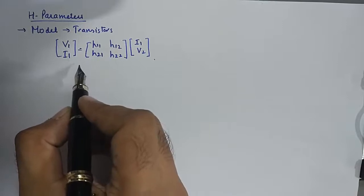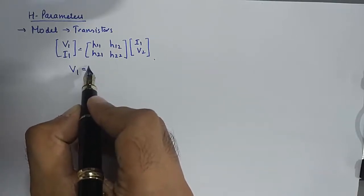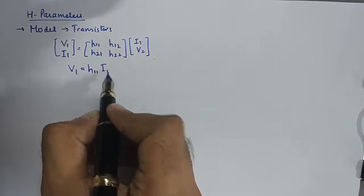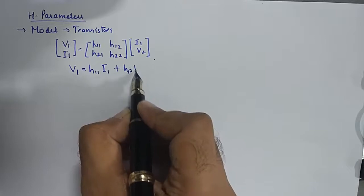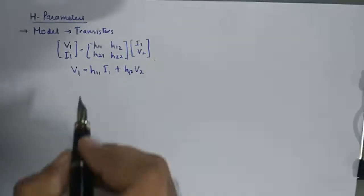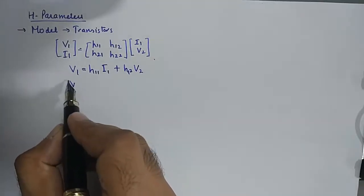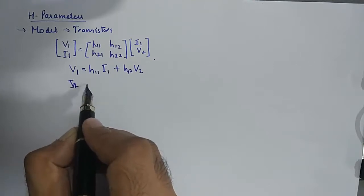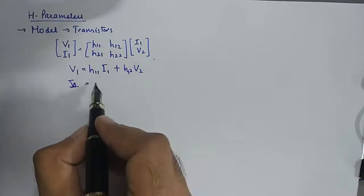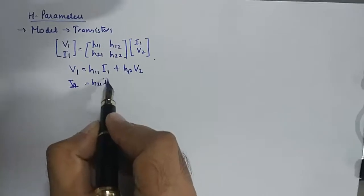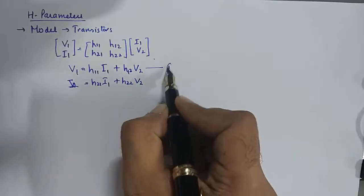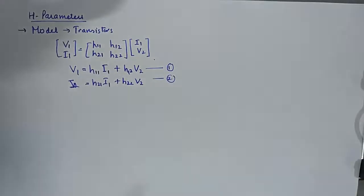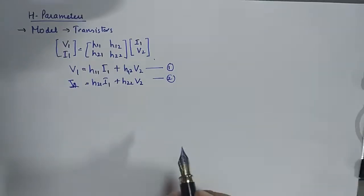When we open this thing, we get V1 is equivalent to h11 I1 plus h12 V2, and I2 equals h21 I1 plus h22 V2. Please understand these are the governing equations for H parameters.